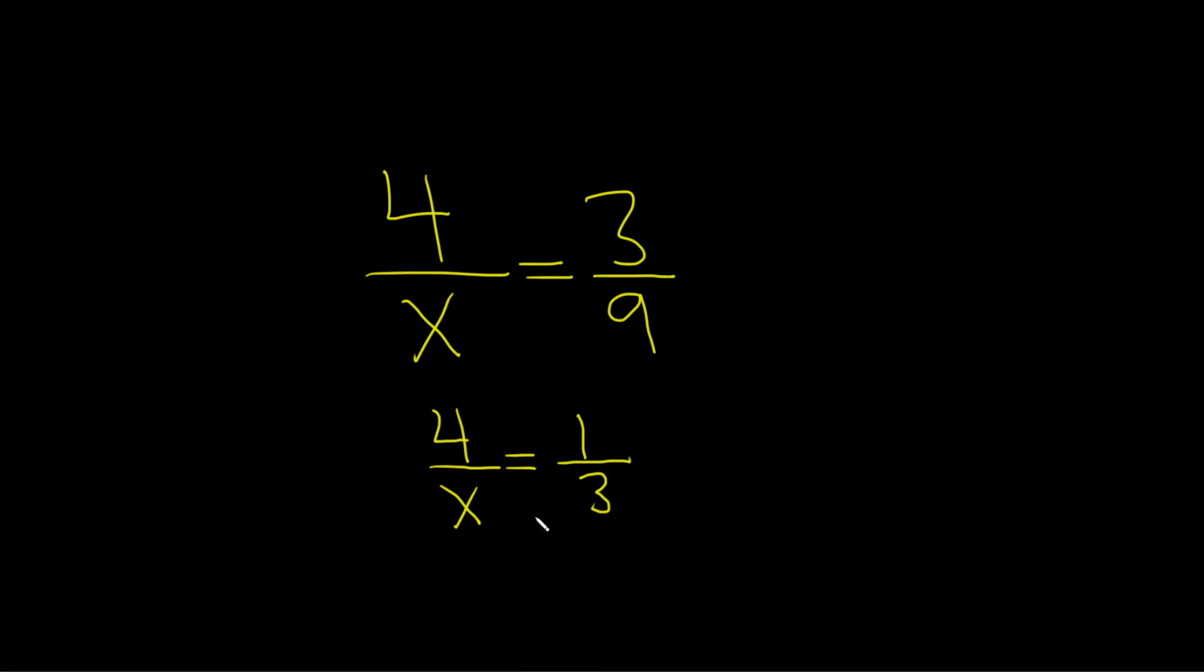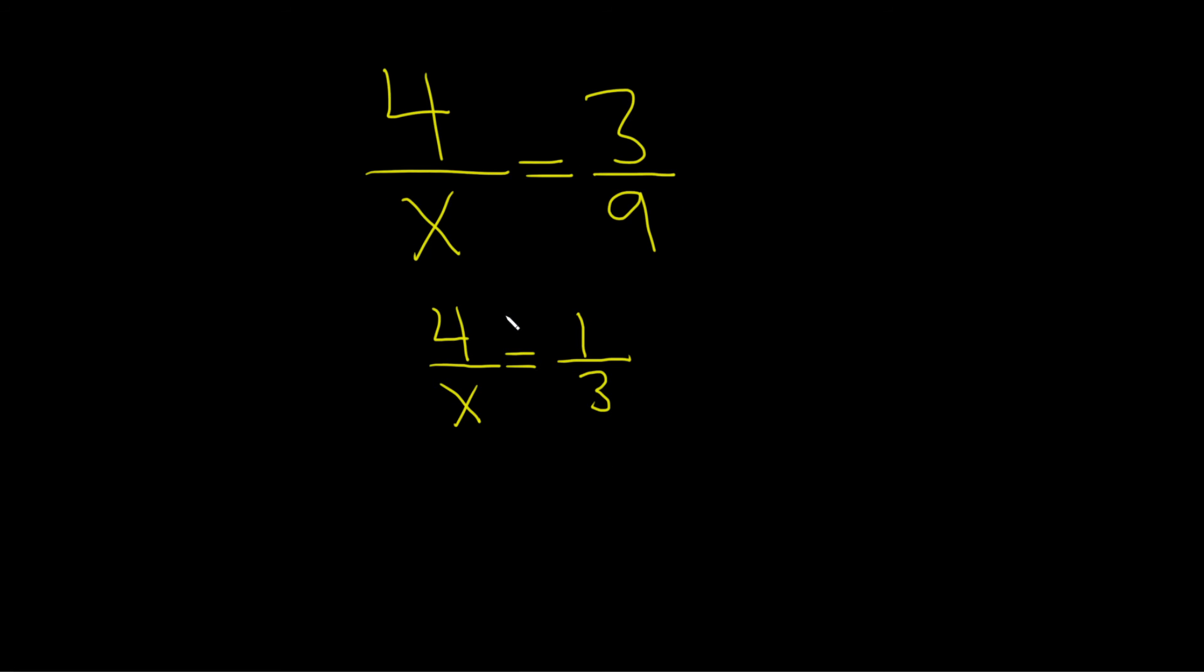And now we can use the method of cross-multiplication. That basically says you do this. You take the x, and you just multiply it by that.